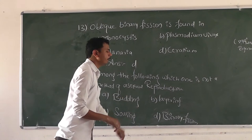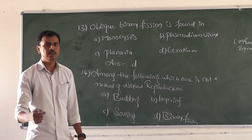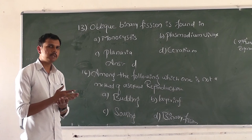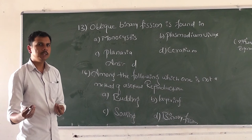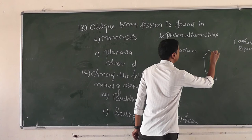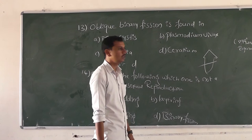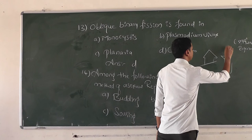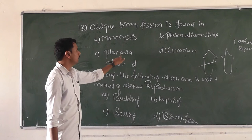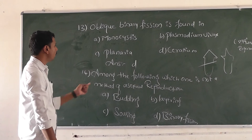Planaria undergoes regeneration, which is a type of asexual reproduction. In regeneration, if any part of the organism is cut and separated from the parent body, that separated part will grow into a new individual and the remaining parent part will also grow. That is what we call regeneration.